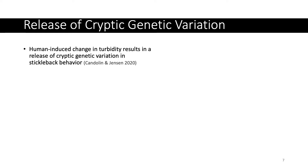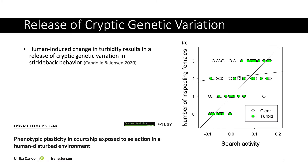First I'm going to talk about an example where a form of human disturbance caused the release of cryptogenetic variation. That was demonstrated in a population of three-spine stickleback studied by Candlen and Jensen, published in 2020. What they demonstrated is shown in this figure on the right, taken straight from their paper. In the clear ancestral environment, most of the phenotypic variation in male search activity on the x-axis exists in the top left quadrant — low search activity correlated to a high number of inspecting females.